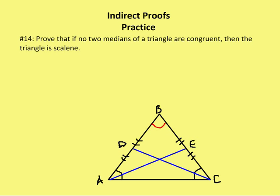So let's talk about number 14 again: prove that if no two medians of a triangle are congruent, then the triangle is scalene. Here I have a triangle, and I have drawn two medians, CD and AE. I mark up the diagram: AD is congruent to DB, and BE is congruent to EC.